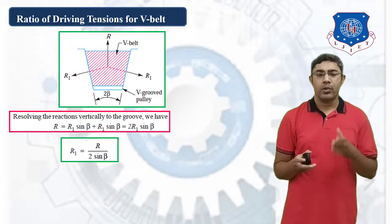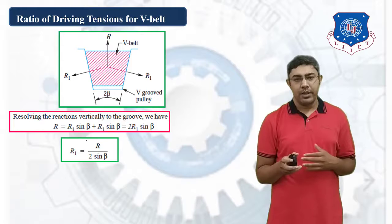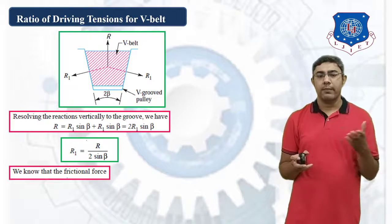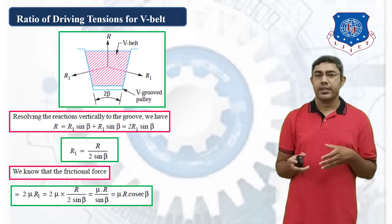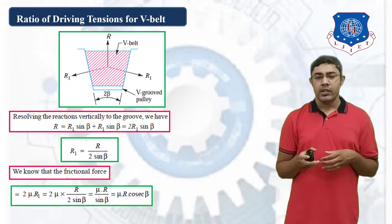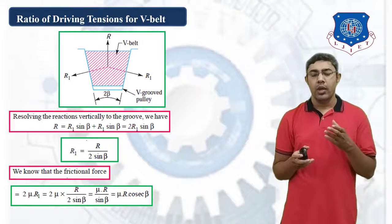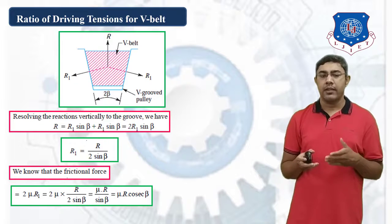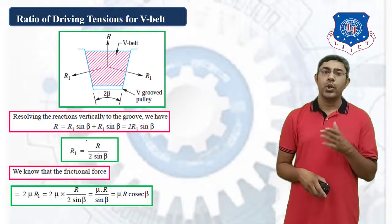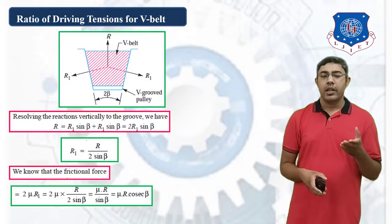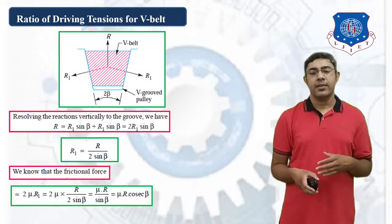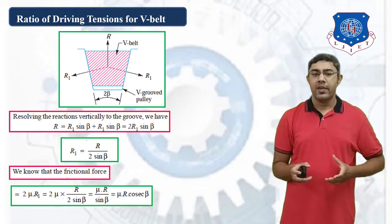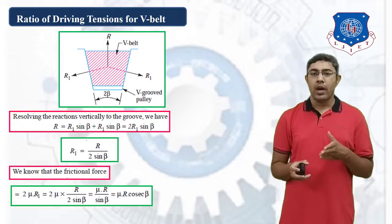R1 is the reaction force normal to the sides of the V-groove pulley. We know friction force normally is F = μR. But in this case, frictional force = 2μ × R1 = 2μ × R/(2 sin β) = μR / sin β = μR cosec β. So the frictional force for V-Belt is μR cosec β.